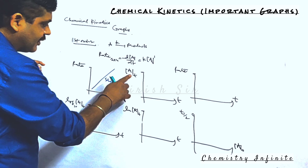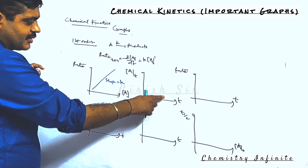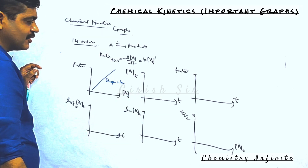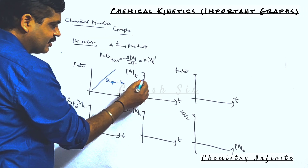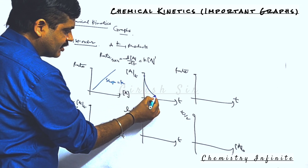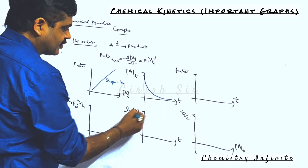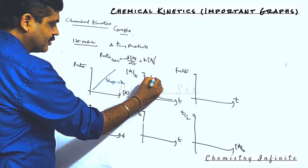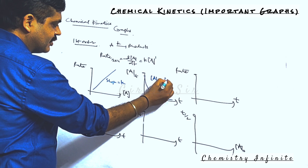The second graph is concentration of reactant versus time. Concentration of reactant decreases exponentially with time in a first-order reaction. This is how it varies.